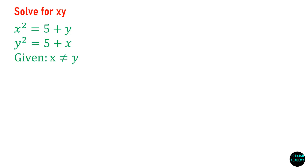In this problem, we have to solve for x times y. You have been given two equations: the first equation is x squared equals 5 plus y, and the second equation is y squared equals 5 plus x. It is also given that x is not equal to y, and you have to find the product of x and y.